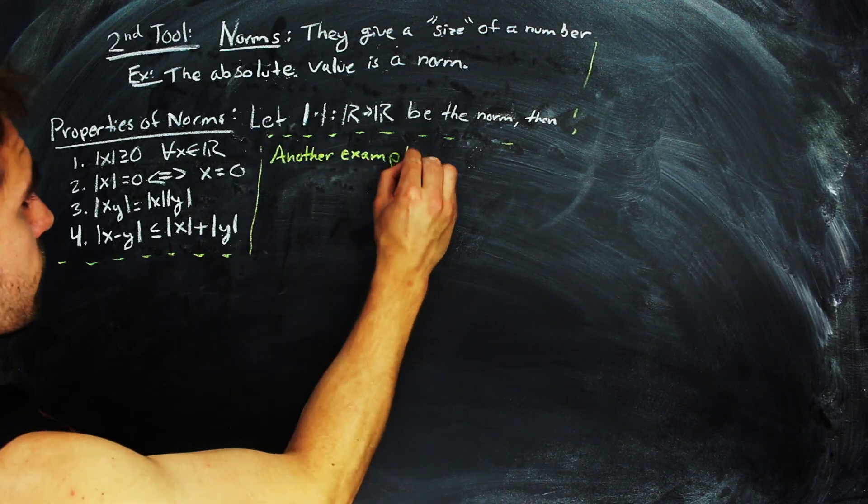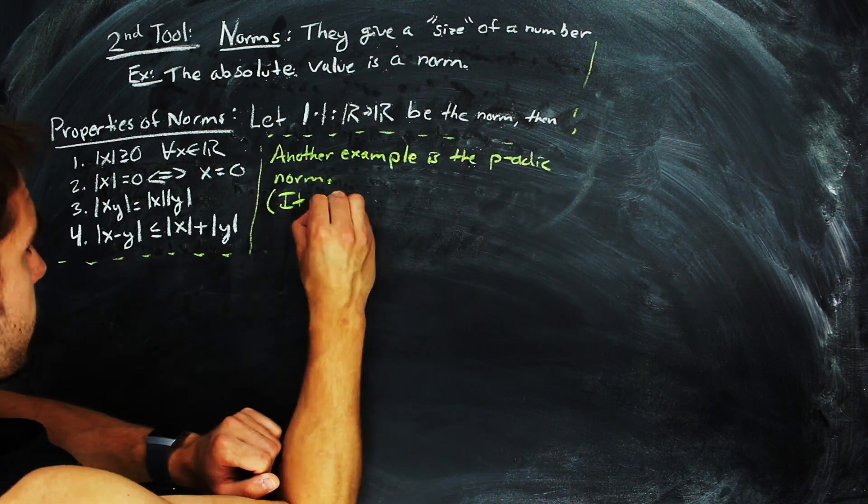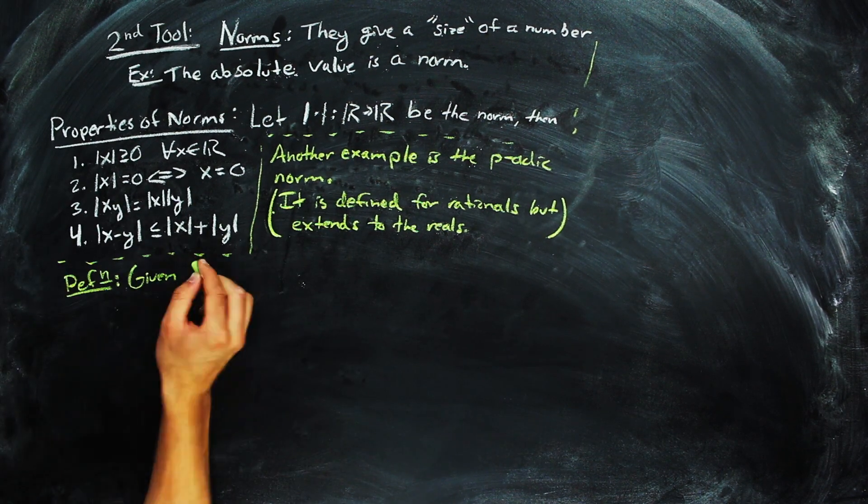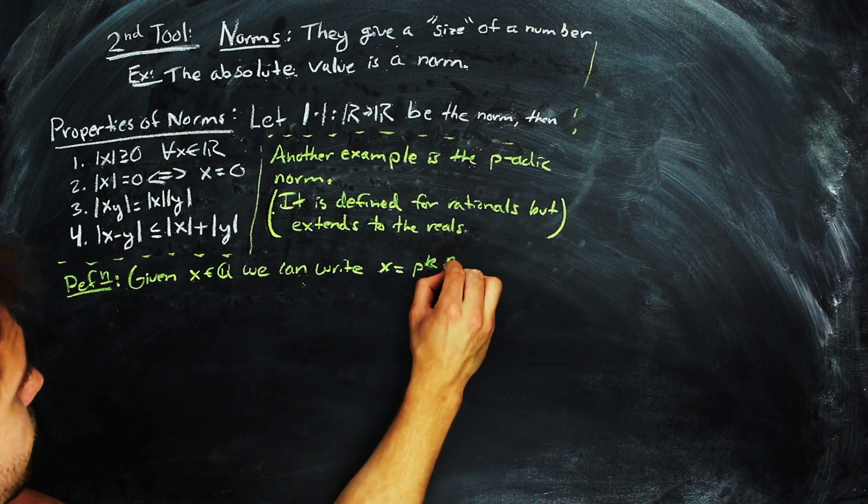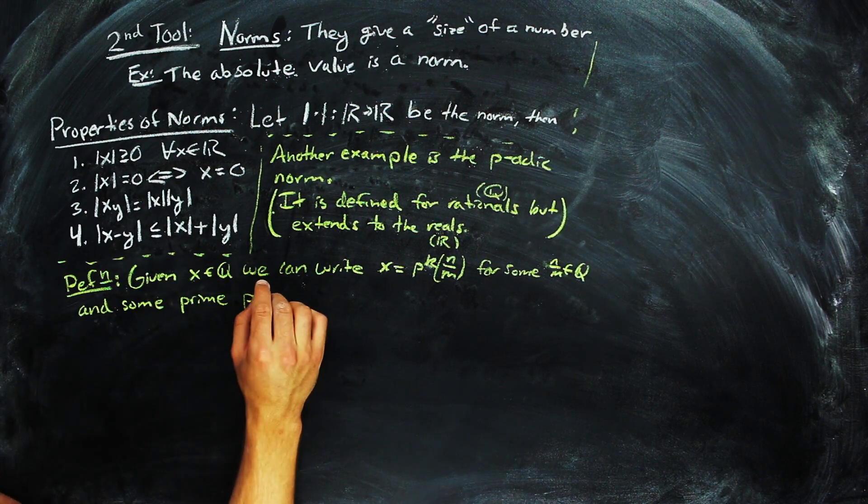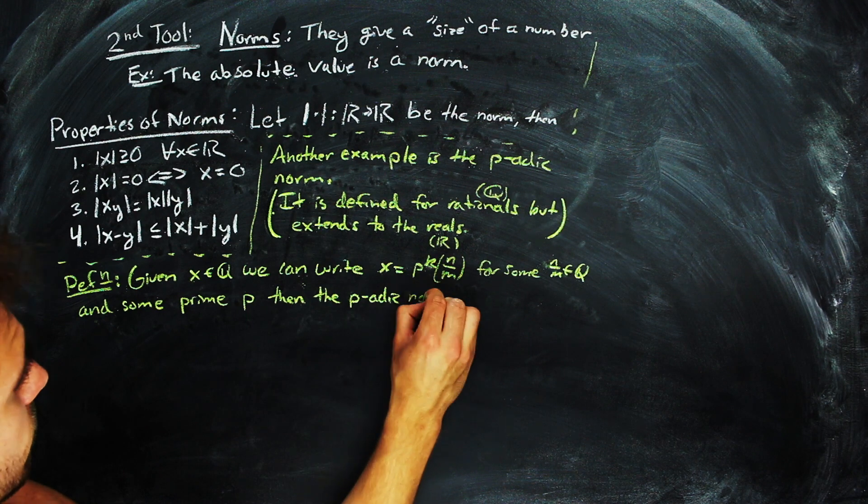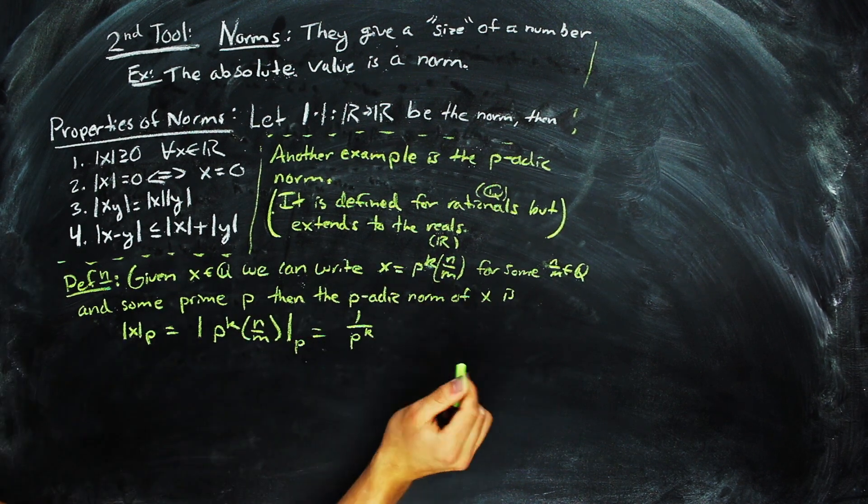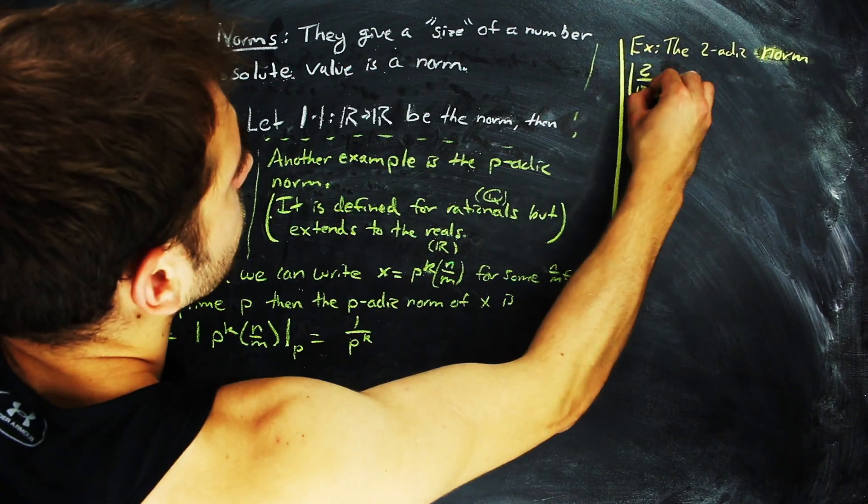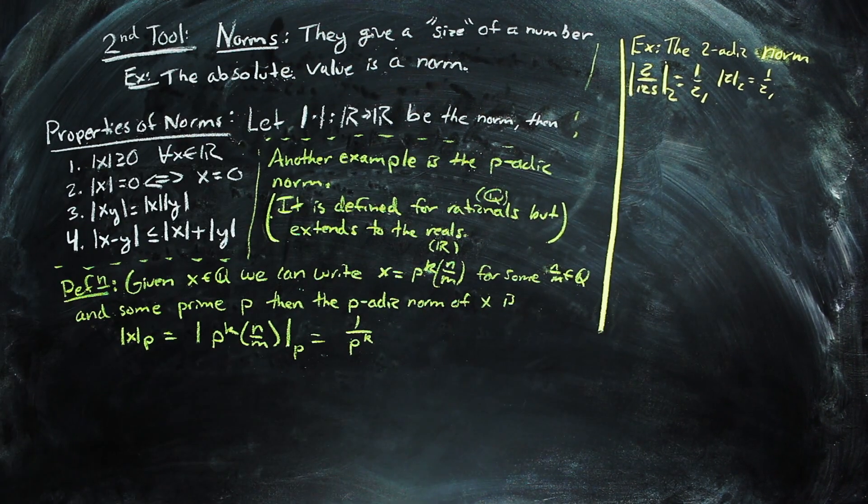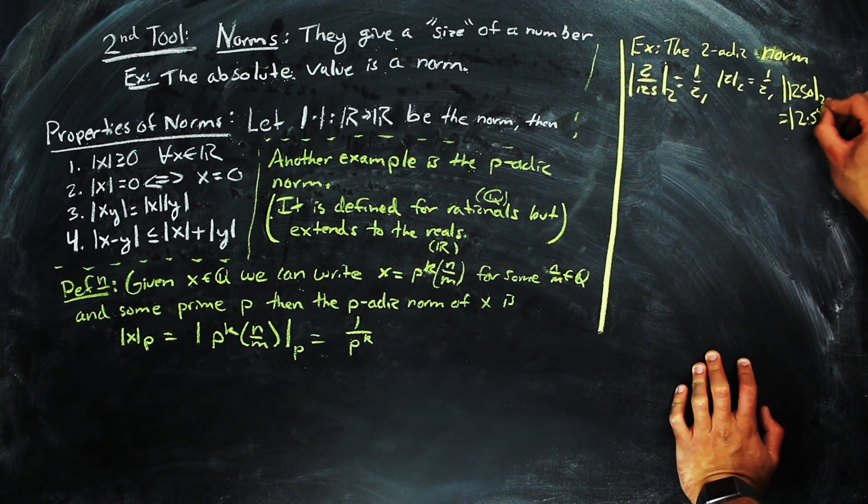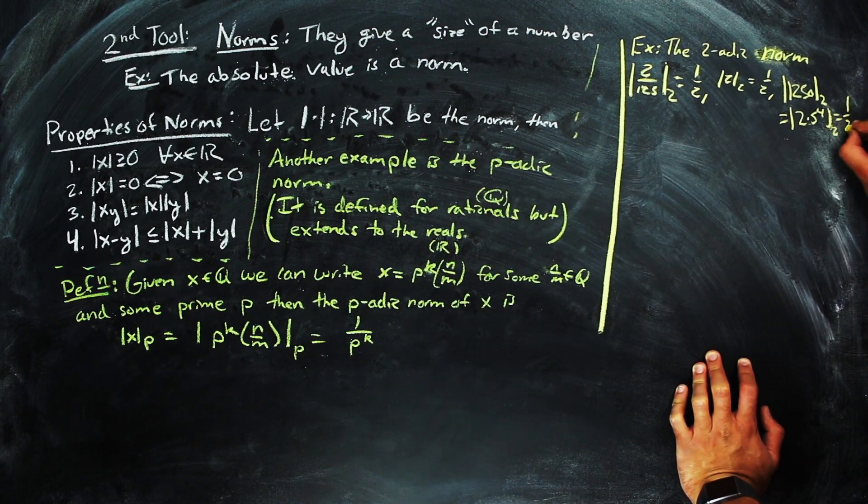Another family of norms are the p-adic norms. So, here's a definition. Given a rational number x and a prime number p, we can write x as a product of a rational number and a power of that prime p to the k. And this is unique by the unique prime factorization of the numerator and denominator of our rational number x. Then, the p-adic norm is given by the inverse of p to the kth power. We're concerned specifically with the two-adic norm. So, for instance, the two-adic norm of 2/125ths is 1/2, just as the two-adic norm of 2 is 1/2, and the two-adic norm of 1250 is just the two-adic norm of 2 times 5 to the fourth, because that's the prime factorization of 1250, and so that is also 1/2.